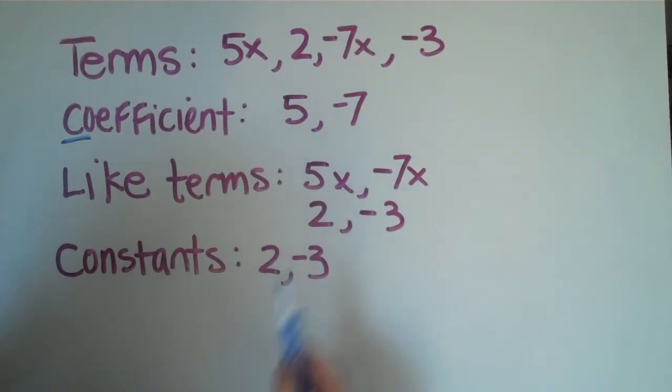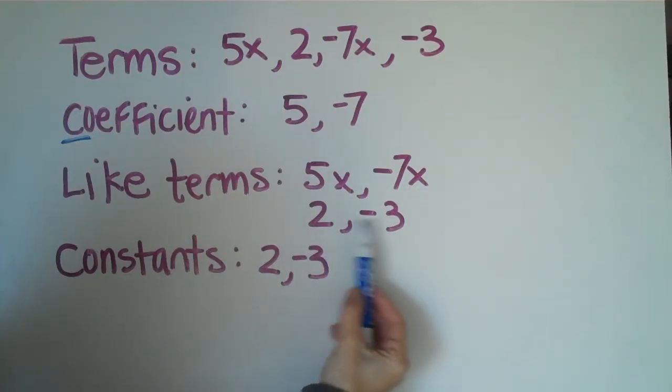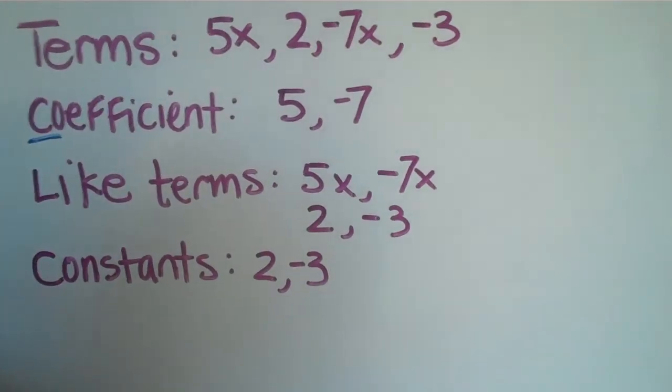An x and a y would not be like terms. If you had 5x and 7y, they would not be considered like terms because they have different variables and could not be combined that would just simply remain 5x plus 7y or whatever it is. So like terms are the ones that have the same variable at the end, or they're both constant. And again, a constant would be a number all on its own.